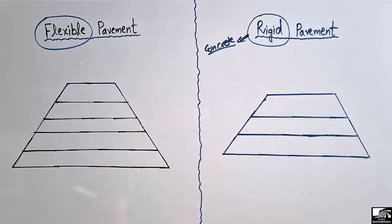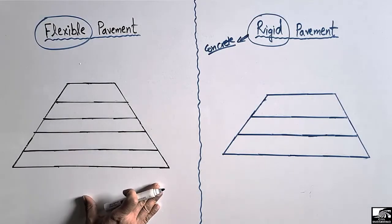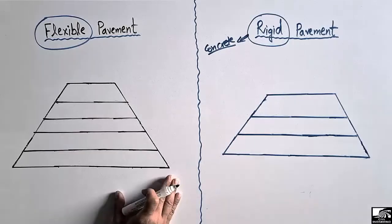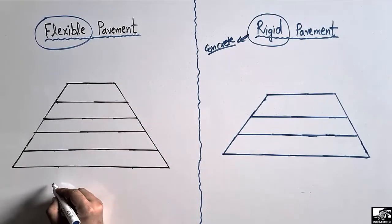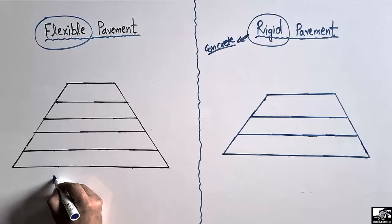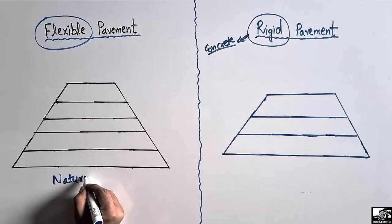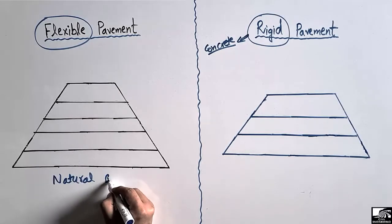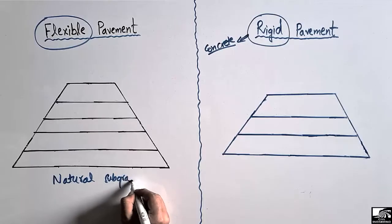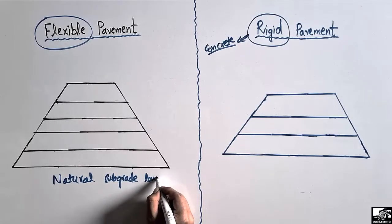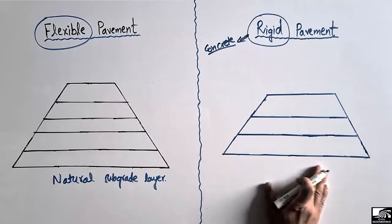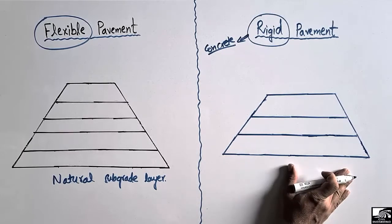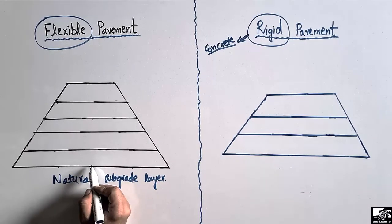Now, what are the different layers in the construction of flexible pavement and rigid pavement? In the case of flexible pavement, there is a natural subgrade at the bottom. There is no such natural subgrade layer in the case of rigid pavement.